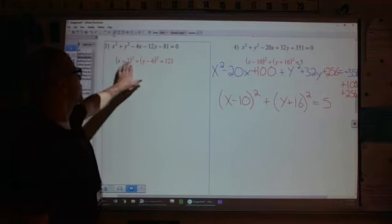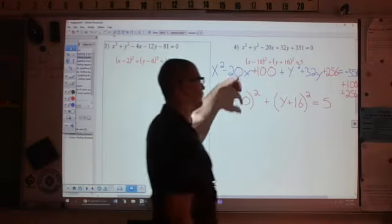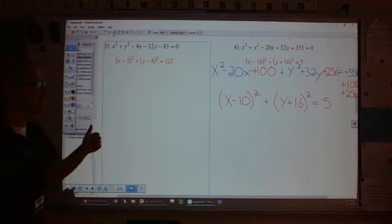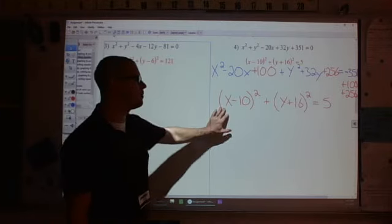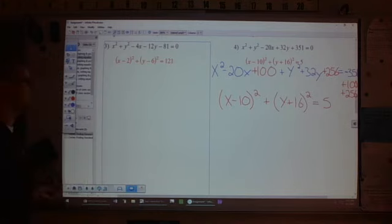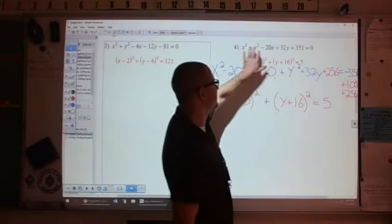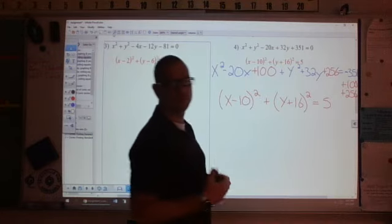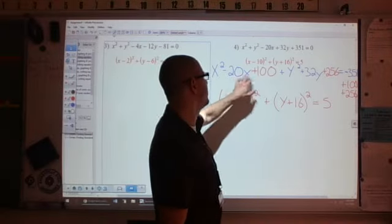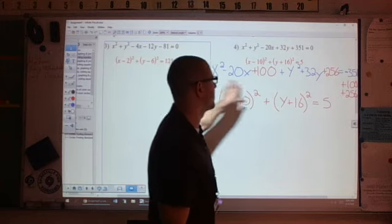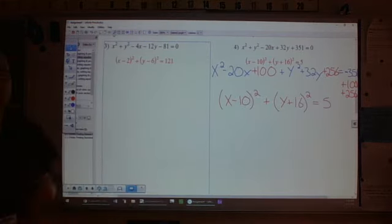You can see x minus 2 squared plus y minus 6 squared equals 121 was what we got for number 3. X minus 10 squared plus y plus 16 squared equals 5 is what we got for 4. That is how we go from standard form to expanded form and expanded form to standard form. You're going to utilize that completing the square method and really grouping like terms. Break things down into simpler pieces. If you have a bunch of x's and y's in an expression, see what you can do if you group all the x's and you group all the y's and you rearrange it so it's easier to work with.